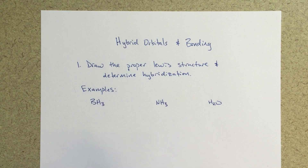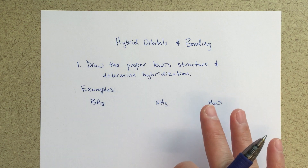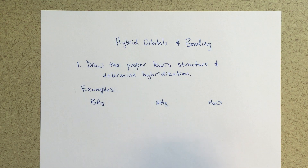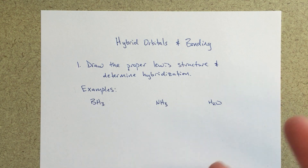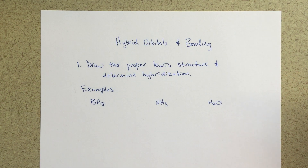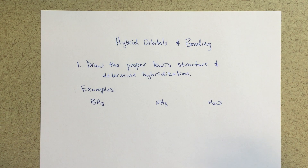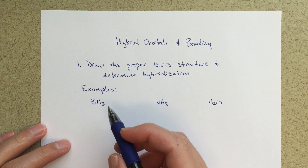When we're looking at these types of problems, the first thing we always want to do is draw the proper Lewis structure and determine hybridization. We talked about Lewis structures because we need to draw them first. If you don't have the proper Lewis structure, you can't do any of the rest — it's the building block for hybrid orbitals, bonding, and polarity. So let's get started drawing these Lewis structures.